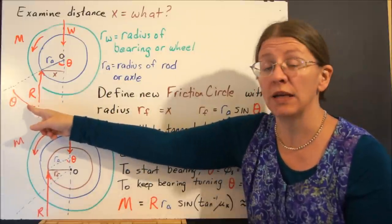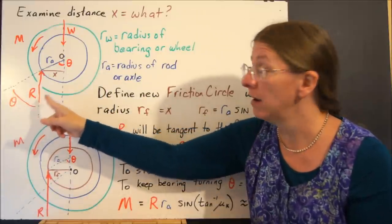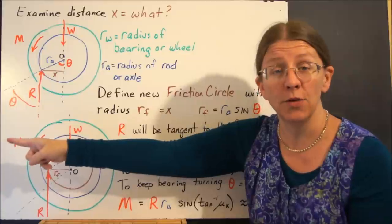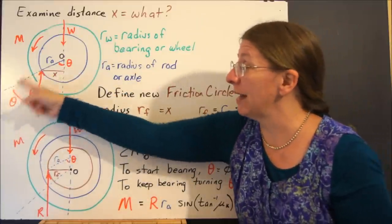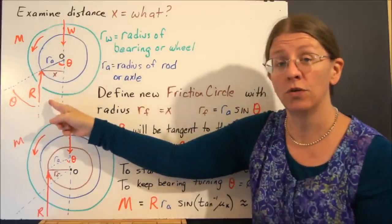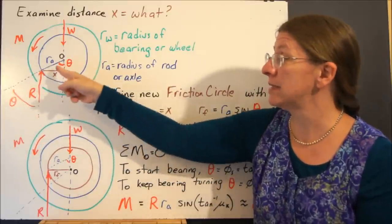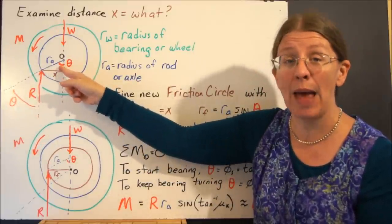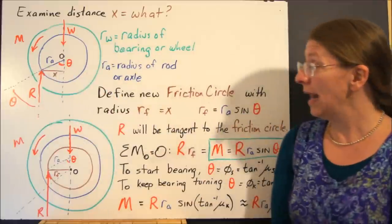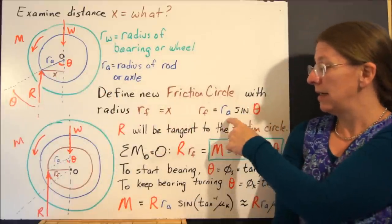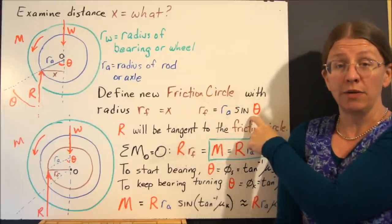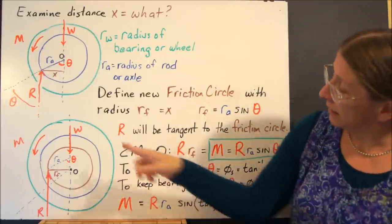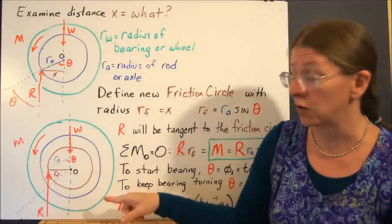And remember, this theta was defined as the angle between R and the normal force to the circle. So it's between that line and the vertical. Well, that line and the vertical means that this triangle up here has that same angle in it, theta. So I can actually say that this distance, which is the radius of my new friction circle, is Ra times sine theta.